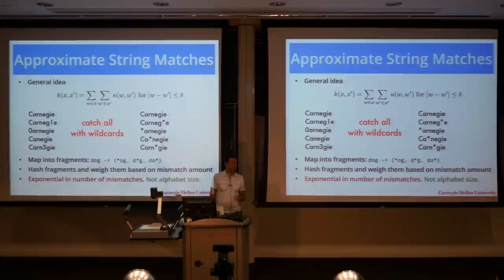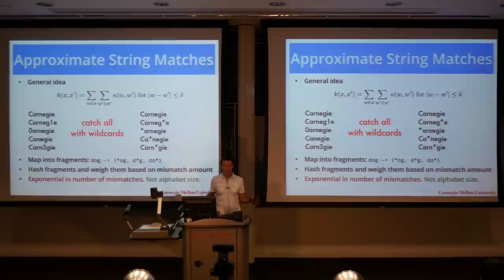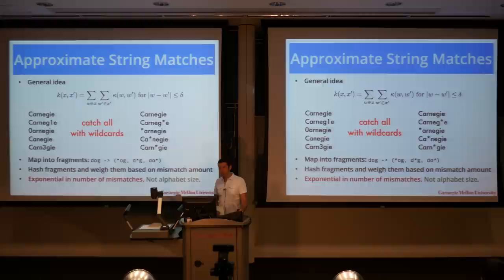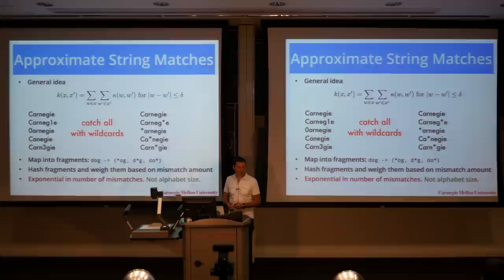Let me show you another application. Spammers at some point realized that if they put 'Viagra' into an email, the spam filter will figure it out and reject it. So they used all sorts of creative ways of misspelling that word to circumvent the spam filter. It's a tug of war: if you misspell it too differently, the intended recipient won't be able to read it. And the intended recipient is usually not someone with a PhD, so you can't really use a very large Hamming distance.